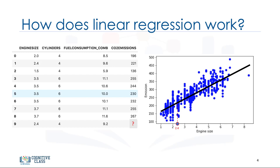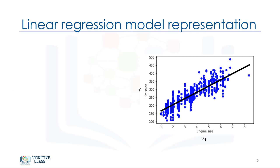Let us assume for a moment that the line is a good fit of the data. We can use it to predict the emission of an unknown car. For example, for a sample car with engine size 2.4, you can find the emission is 214. Now, let's talk about what the fitting line actually is.